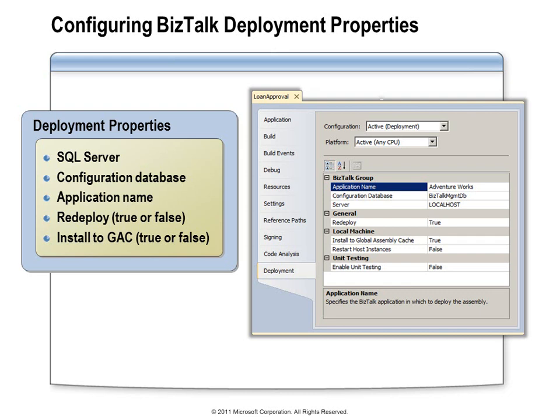You can also indicate if you want Visual Studio to automatically install your assembly in the global assembly cache. And you can specify whether or not you want Visual Studio to automatically restart any host instances, which could be useful during development when you need to deploy the same version of your assembly more than once. The old instance of your assembly will remain in memory until the process that has loaded it restarts. If your development environment is configured with many host instances, you can leave this option disabled and then select which instances you want to restart in the BizTalk administration console.